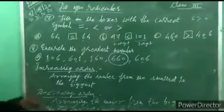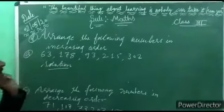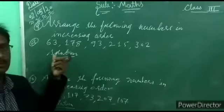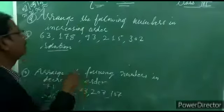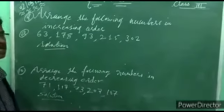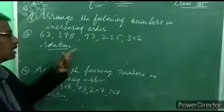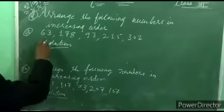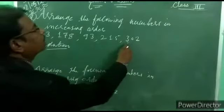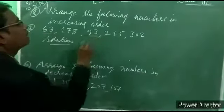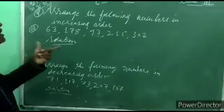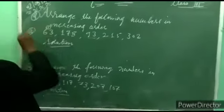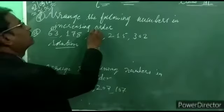Question 9 example: arrange the following numbers in increasing order — smallest to biggest. Total 5 numbers are given: 63, 178, 93, 215, 302. From these, 63 and 93 are 2-digit numbers, and 178, 215, 302 are 3-digit numbers. From the 2-digit numbers, 63 is smaller, so 63 comes first, and 93 comes second.